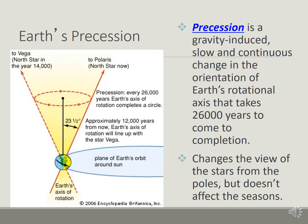One thing we have to understand is the Earth's precession. Well, precession is a vocabulary word and it is a gravity-induced, slow and continuous change in the orientation of the Earth's rotational axis. It takes about 26,000 years to come to completion.